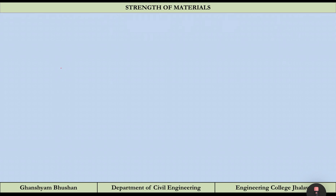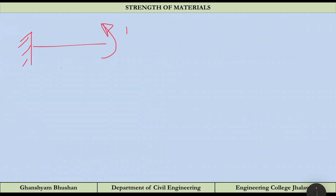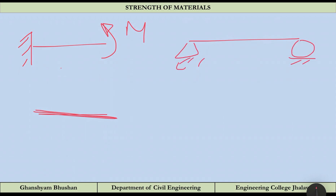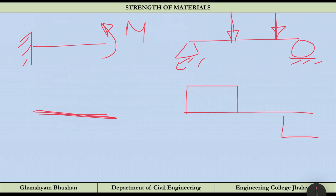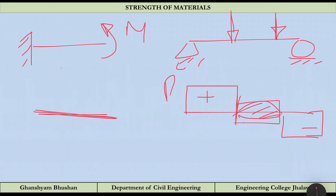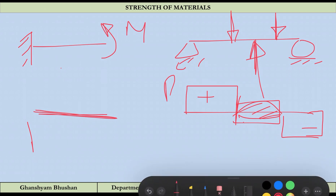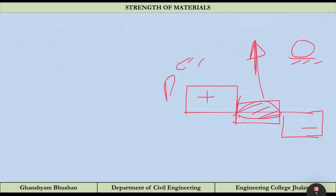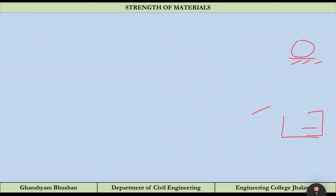Let me show you both cases. In the first case — the cantilever with a couple — the shear force is zero. In the second case — the simply supported beam with two equal loads — the shear force diagram shows that in the region of pure bending the shear force is always zero. So keep in mind: in the region of pure bending, shear force is zero.